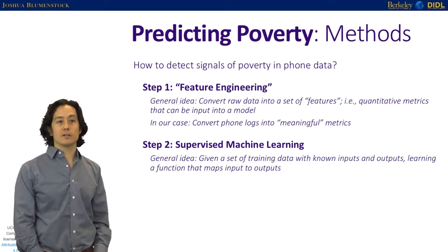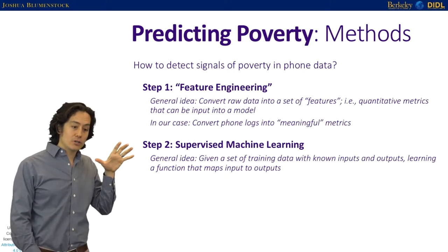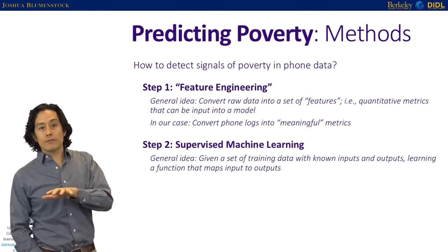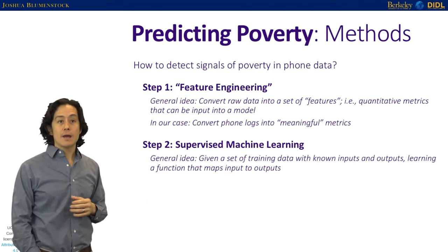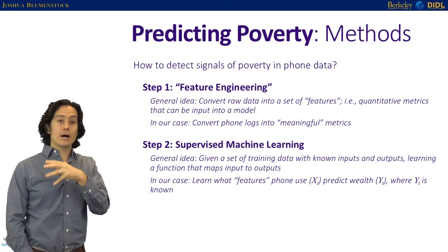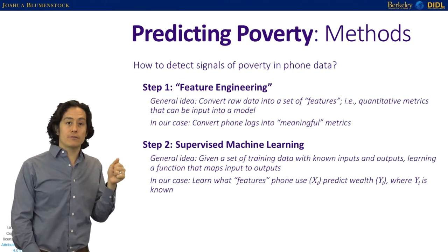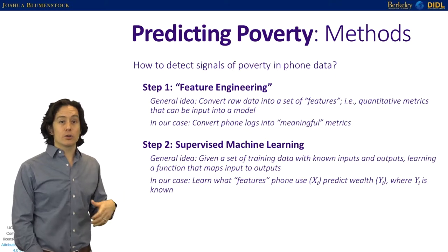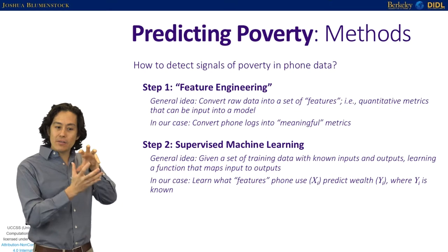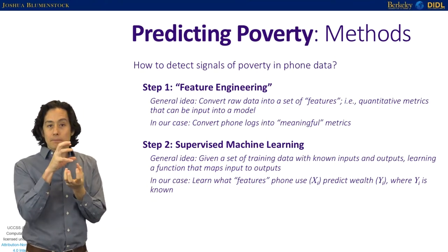In our case, the inputs are the phone features from feature engineering, and the outputs are measures we collect in the phone survey — specifically wealth. In a phone survey, we ask someone how wealthy they are, giving us ground truth. We then ask: given that ground truth of wealth, can we use the phone data — number of contacts, international calls — to estimate it? So for this study, we ran a phone survey with 856 people, and for each person we have both the X's from the phone company and the Y's from the survey.